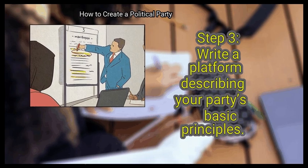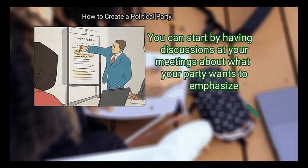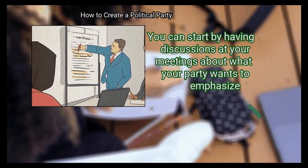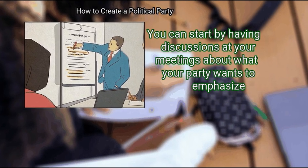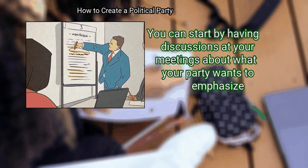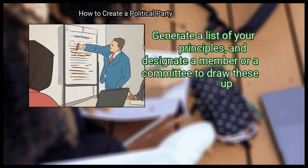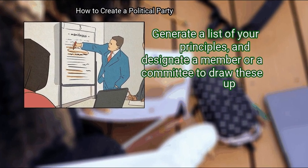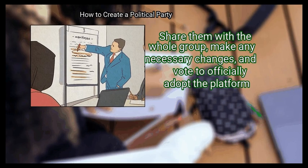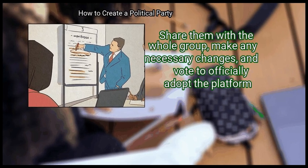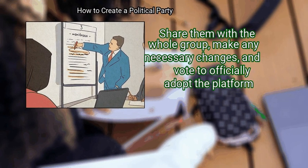Step 3: Write a platform describing your party's basic principles. You can start by having discussions at your meetings about what your party wants to emphasize. Generate a list of your principles and designate a member or a committee to draw these up. Share them with the whole group, make any necessary changes, and vote to officially adopt the platform.